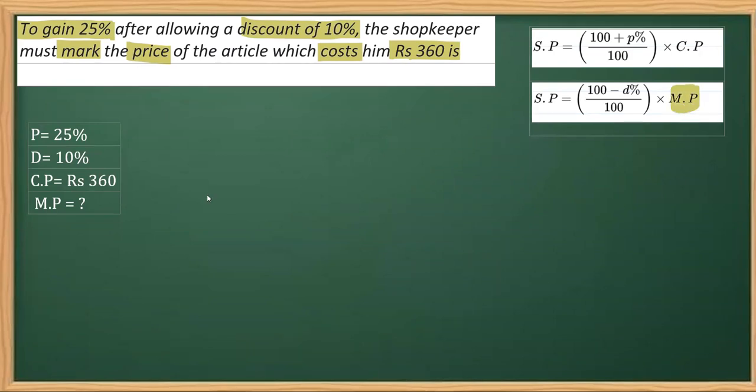We have to get MP, and as I can see, for finding mark price we need the selling price, and we don't have selling price. In order to get selling price, we need the cost price and the profit percent, which we have.